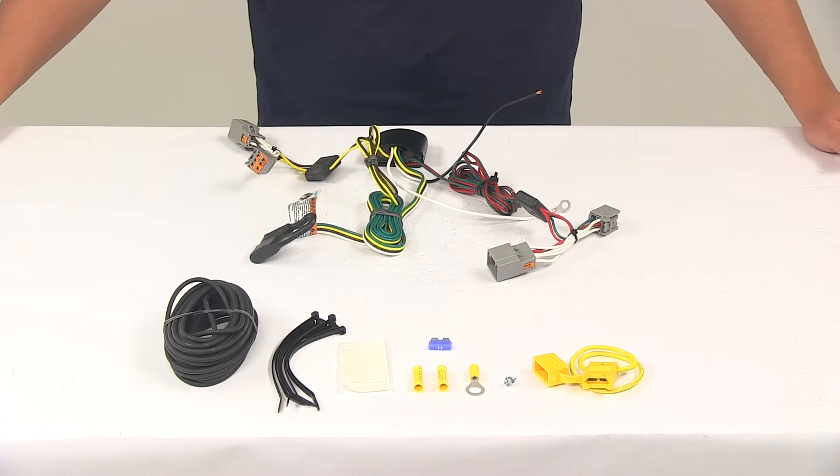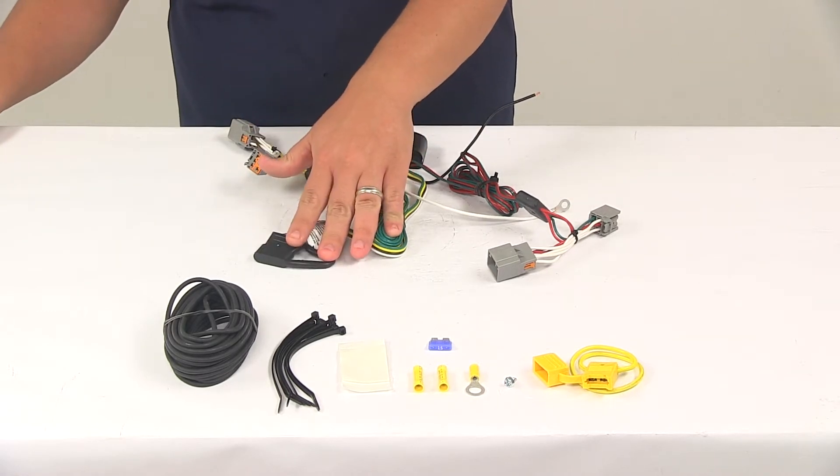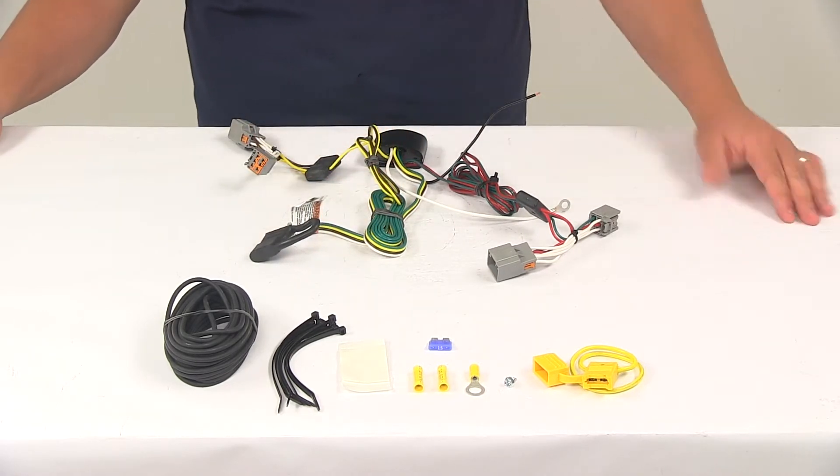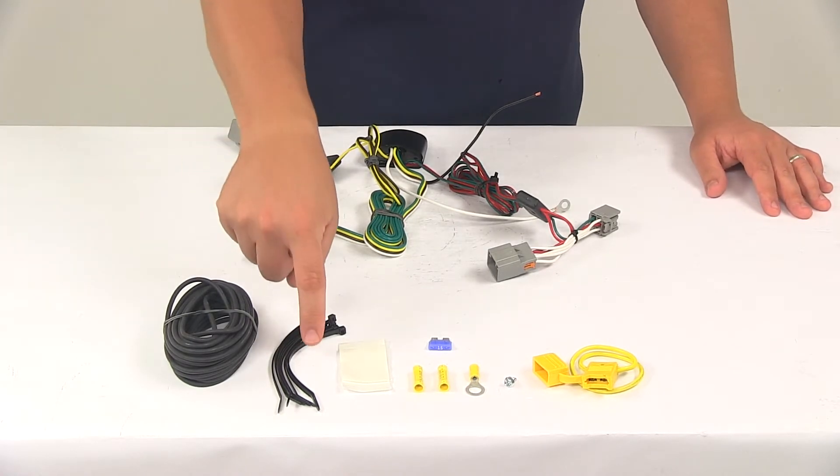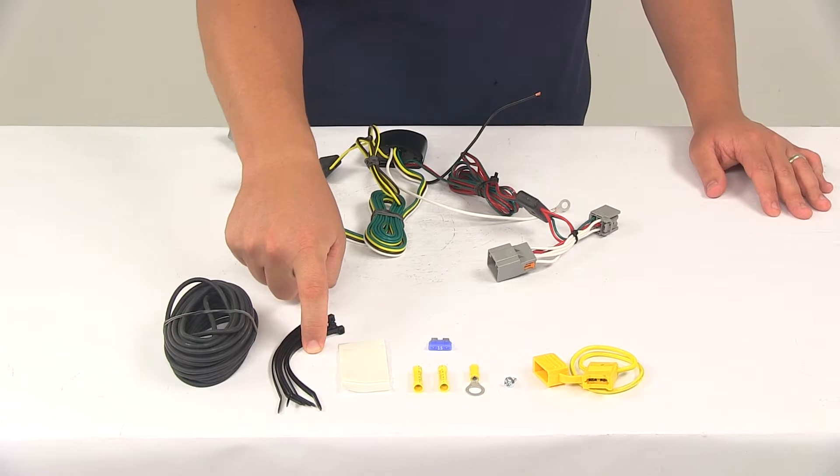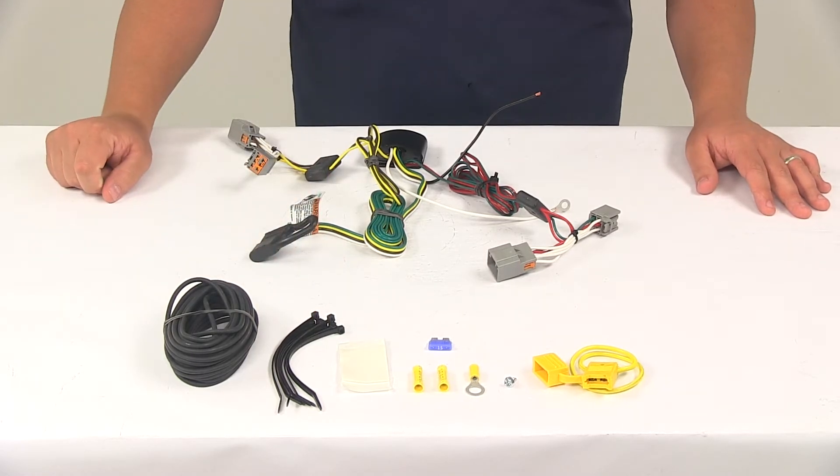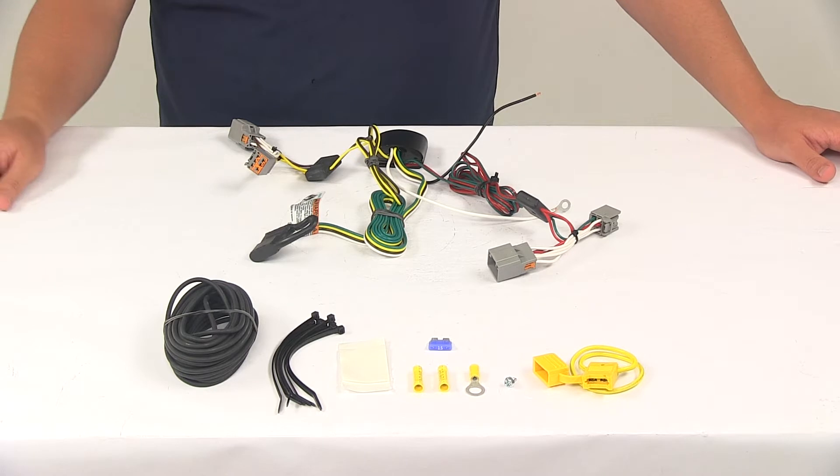Once your installation is complete, the four-way connector is going to be stowed in an out of the way location within your cargo area. I also want to mention that the kit's going to come with some zip ties or cable ties. Those can be used to secure any excess or slack in the wiring that you may have.